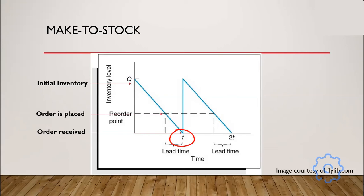The point of T is when the inventory that was ordered suddenly arrives and we go back up to level Q. T can be either at zero inventory, or if we have safety stock, T might be at a point of zero plus our safety stock. We generally don't want to draw down through safety stock unless we have to, and if we do, we replenish it when we go back up to Q. This cycle then continues at 2T, 3T, and 4T.